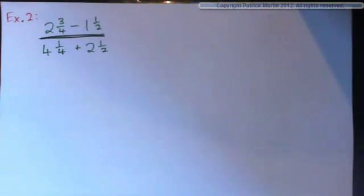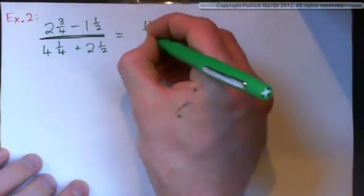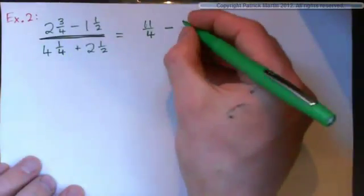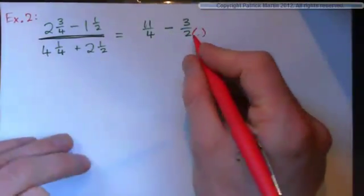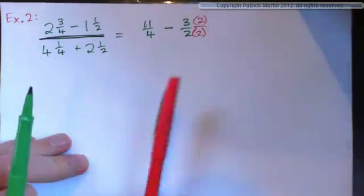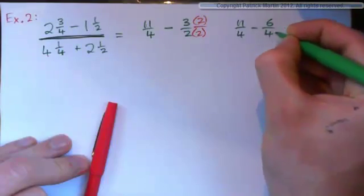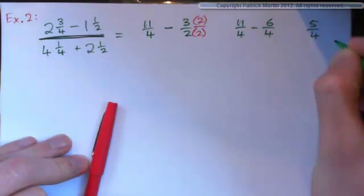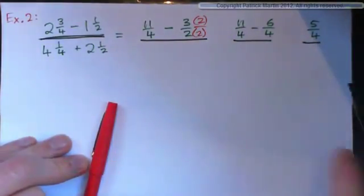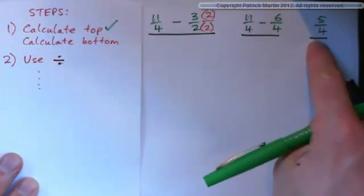I'm going to calculate the top first. 4 times 2 is 8, and 8 plus 3 is 11 — so that's 11 quarters. Minus: 2 times 1 is 2, and 2 plus 1 is 3 — so that's 3 over 2. Now find the lowest common denominator: 2 times 2 gives 4. So this gives me 11 quarters minus 6 quarters, and 11 minus 6 is 5. The top becomes 5 quarters. I'll leave it as an improper fraction.